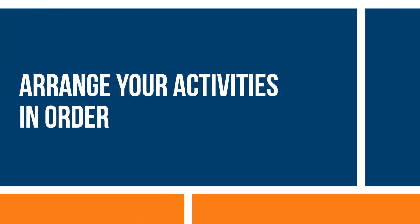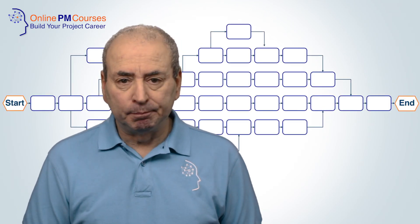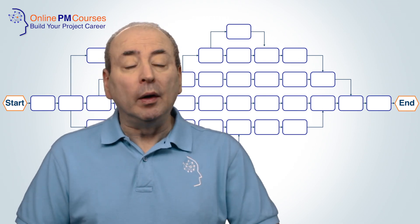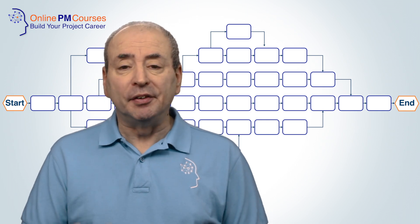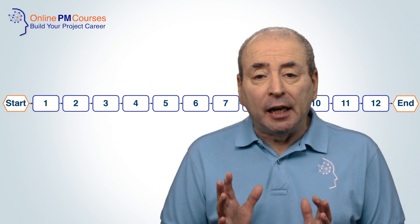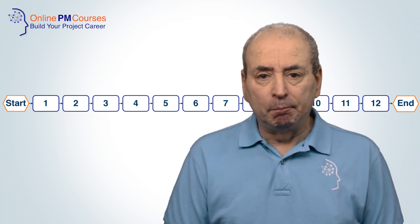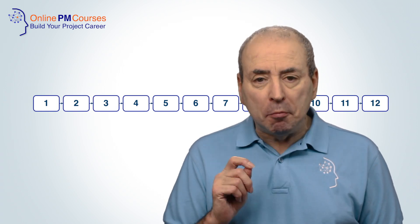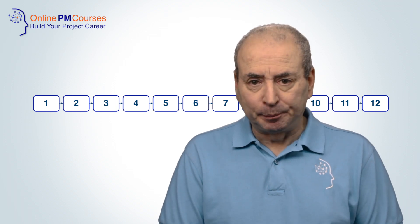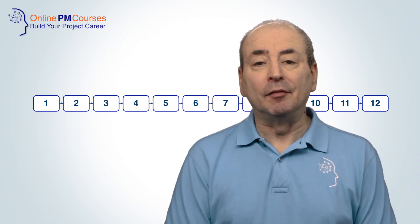Step three: arrange your activities in order. Firstly, you need to define your start and end points — when will you start the project, when will you start that first task, and what is the last task you need to complete to finish the project? Next, place your tasks in sequence. Define a logical order determined by your dependencies between predecessors and successors. Start with tasks that have no predecessors and then link them to their immediate successors. This will create a logical flow, a sequence of activities, that will be the basis of your network diagram.